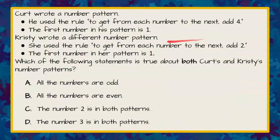Here's our question. Kurt wrote a number pattern. He used the rule to get from each number to the next add four. The first number in his pattern is one.